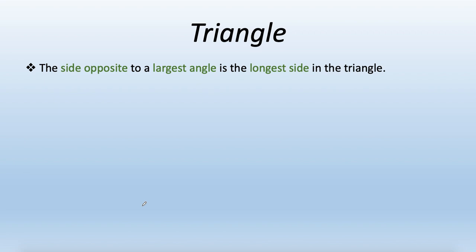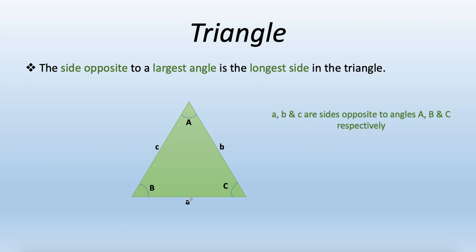Another important property: the side opposite the largest angle is the longest side in the triangle. If a triangle has angles A, B, and C with opposite sides a, b, and c respectively, and angle A is greater than angle B which is greater than angle C, then side a is the longest, side b is second, and side c is the shortest. So a > b > c.